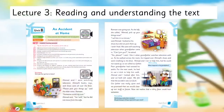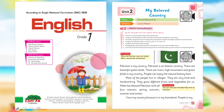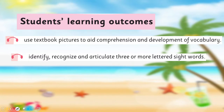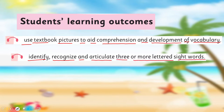My dear students, today we are going to start reading and understanding the text. In your English for Grade One, I taught you to locate a text or lesson by looking at titles and pictures. I hope you remember; if not, you may watch that video lecture again. We are going to extend that practice by using textbook pictures to aid comprehension and development of vocabulary, and to identify, recognize, and articulate three or more lettered sight words. These are our today's SLOs.